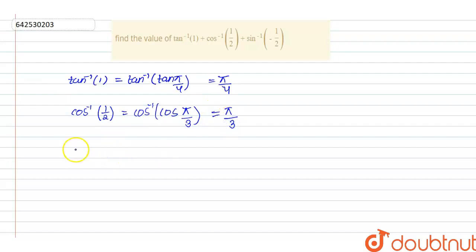Now remaining, given that sin inverse minus 1 by 2. So sin inverse minus 1 by 2 can be written as sin inverse minus sin pi by 6. This can be written as sin inverse sin minus pi by 6. So this will be equals to minus pi by 6.